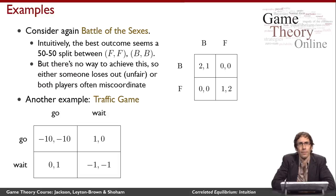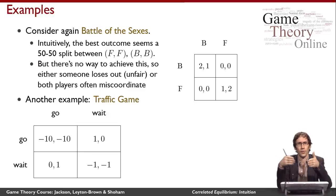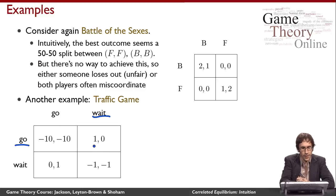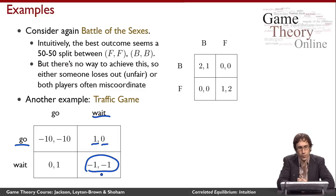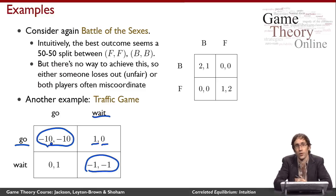Here's another example that gives intuition for what's really going on: the traffic game. This models two cars arriving at an intersection who must decide whether to wait or go through. If one goes and the other waits, the one going gets the most utility and the other gets a bit less. If both wait, they're both worse off. If both go, the worst outcome occurs — they crash.